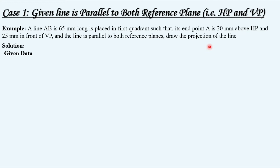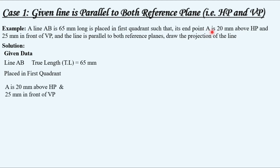Let's extract the given data. The given line AB is 65 mm long — that is the true length of the line. It is placed in the first quadrant. The location of endpoint A is 20 mm above HP and 25 mm in front of VP. The line is parallel to both HP and VP.